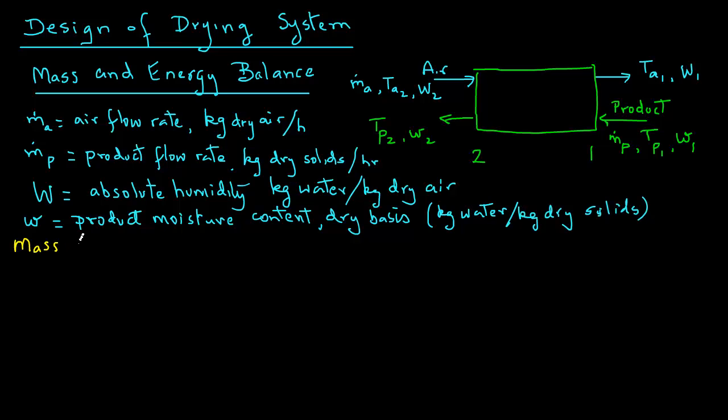Let's conduct a mass balance. Before we do that, we should draw a system boundary around our drying system. This shows the system boundary. Now we can look at all the streams that are entering and exiting this particular system.